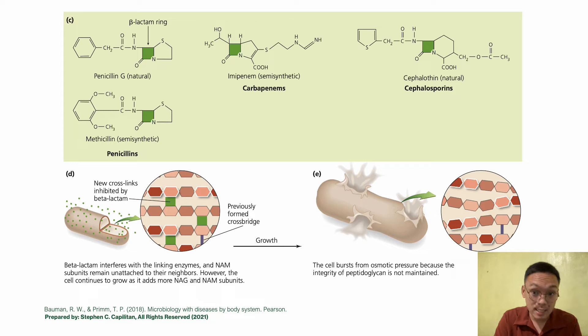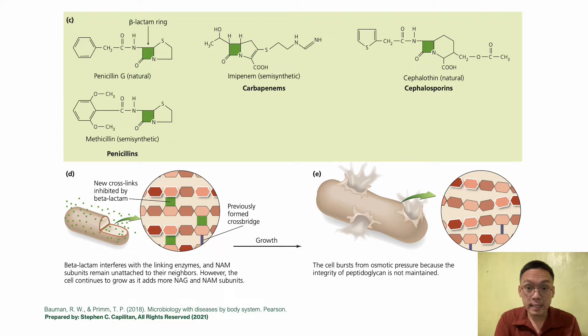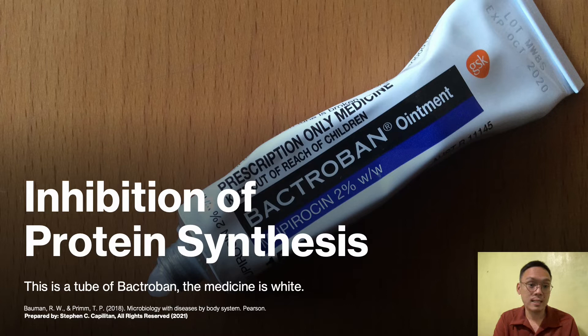After the beta-lactam weakens the peptidoglycan by preventing NAM cross-links, the bacteria undergo lysis. A question to consider: what force actually kills an affected bacterial cell? You may add your answers to the comment section. Next, we look at inhibition of protein synthesis. This tube of Bactroban — generically called mupirocin — is a useful topical antibiotic against superficial skin infections such as impetigo or folliculitis. It is also used to eliminate methicillin-resistant Staphylococcus aureus from the nose without symptoms.